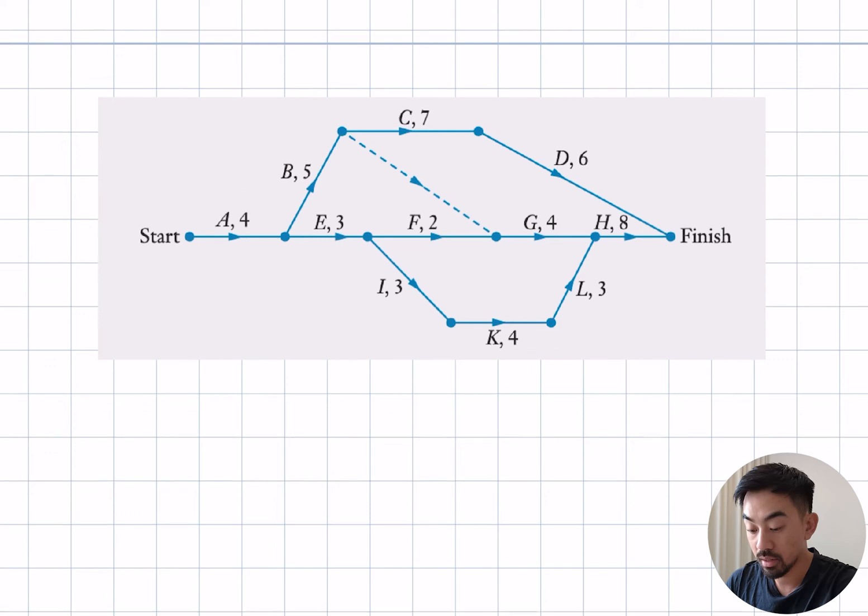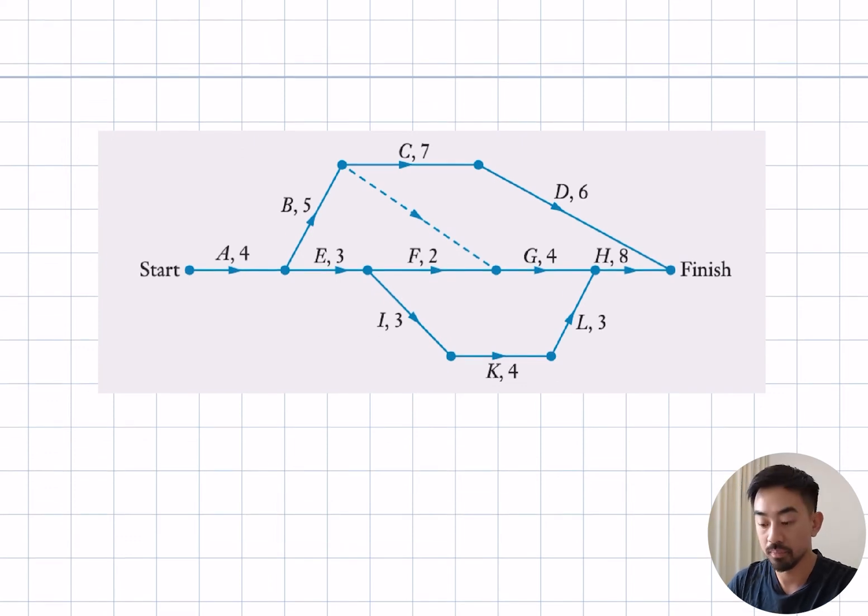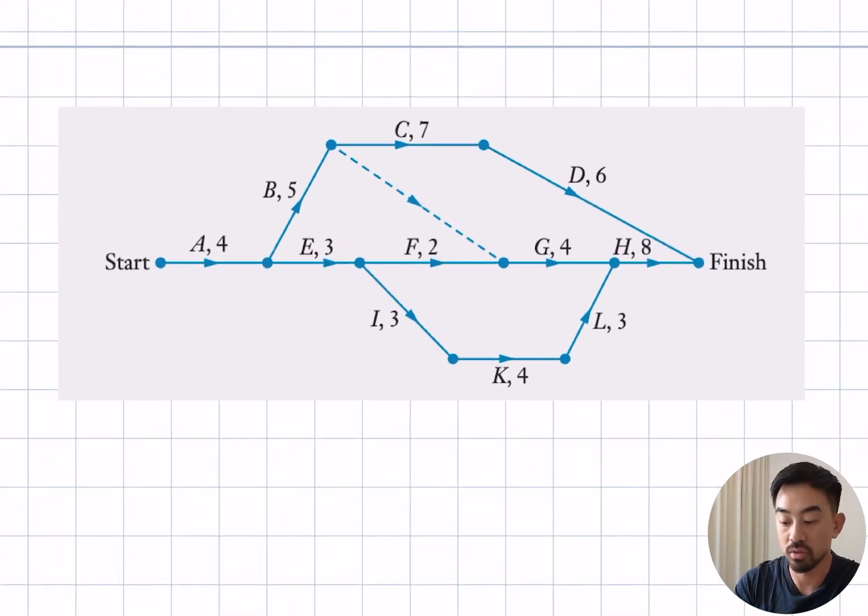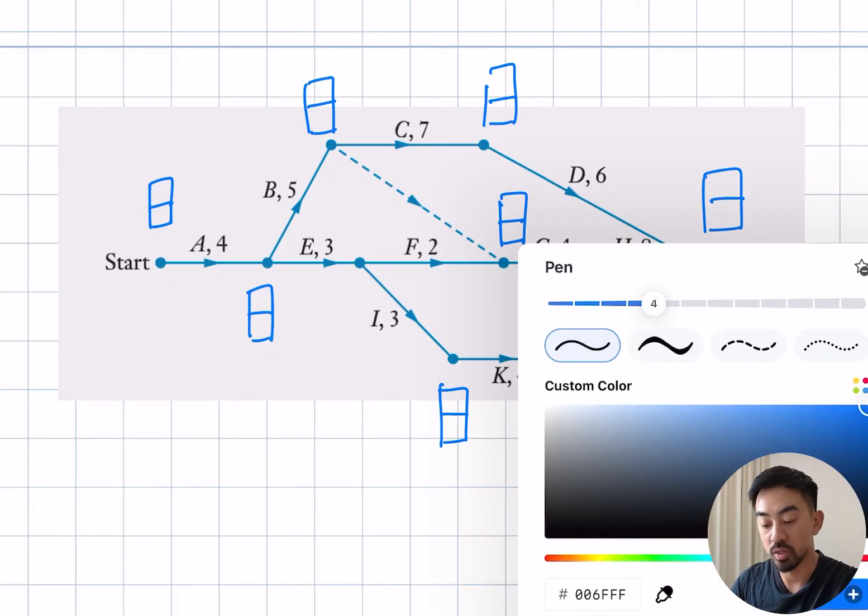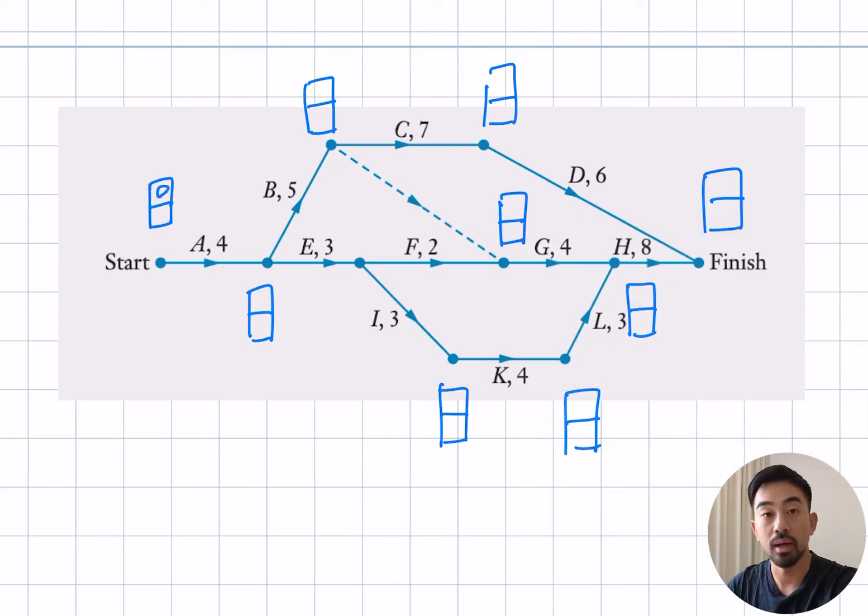Okay, let's look at another one. So here's one with a dummy. Let me draw in my little boxes first. Okay, let's begin. Starting at the start vertex, moving along, 0 plus 4 is going to give 4 here.